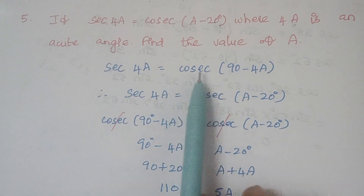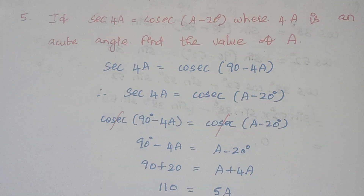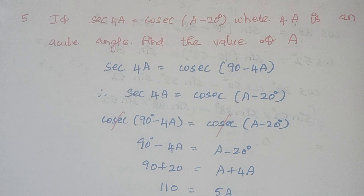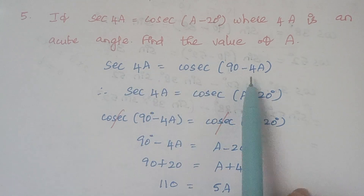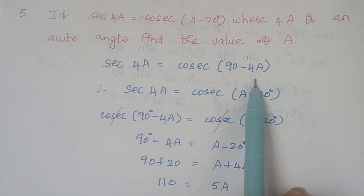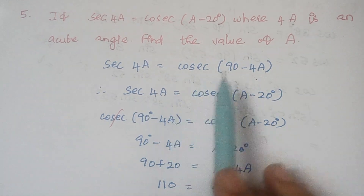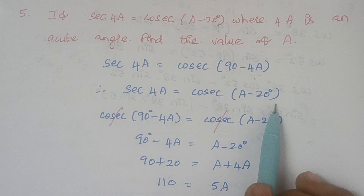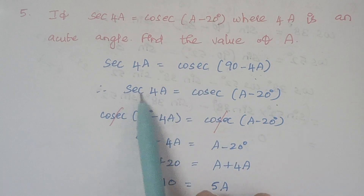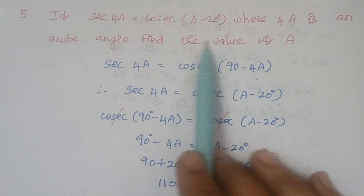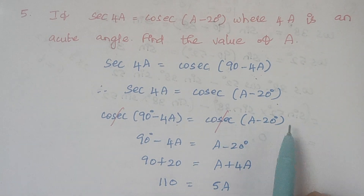We know that secant 4A is equal to cosecant(90 minus 4A) — that is, secant theta equals cosecant(90 minus theta), and in place of theta there is 4A. Now writing down the given expression: secant 4A is equal to cosecant(A minus 20). We have framed secant 4A in the form of cosecant, so we replace secant 4A with cosecant(90 minus 4A), giving cosecant(90 minus 4A) equals cosecant(A minus 20).